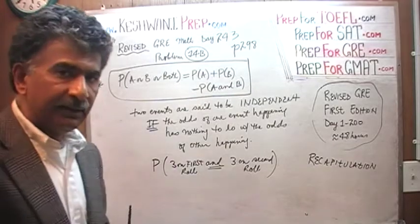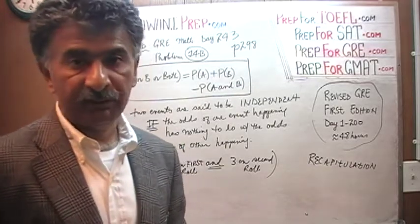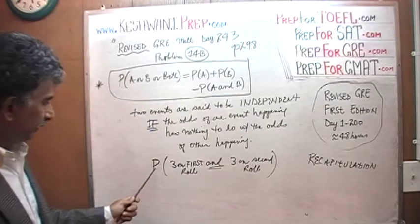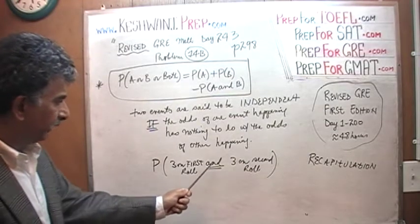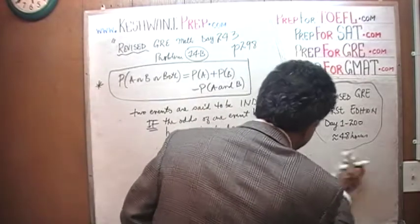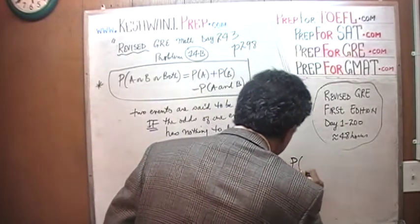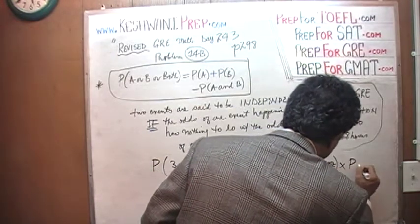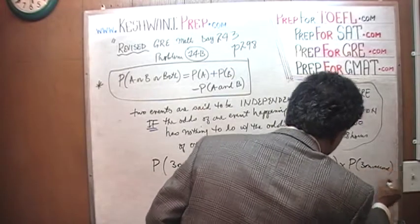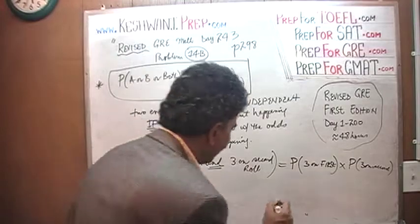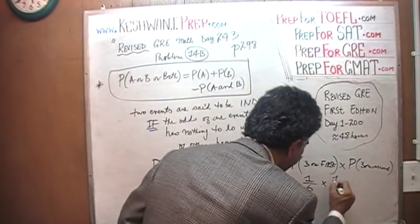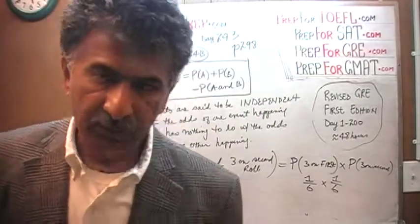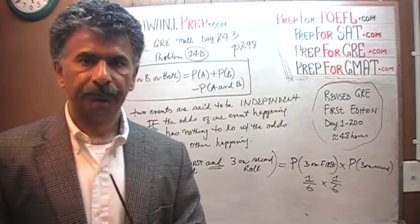What are the odds of getting a three on the first roll? It's one out of six. The probability of getting three on the first roll and three on the second roll equals the probability of three on the first roll times the probability of three on the second roll — one-sixth times one-sixth — giving one out of 36. The same logic applies for any combination, like getting a 3 on the first roll and a 5 on the second.